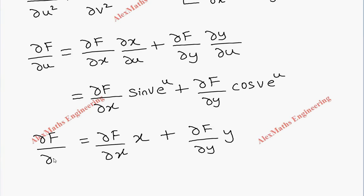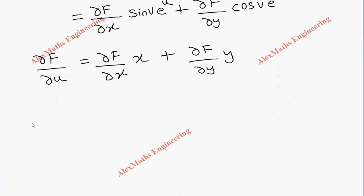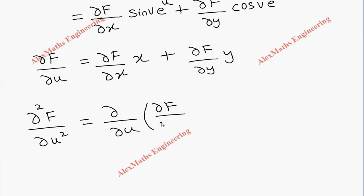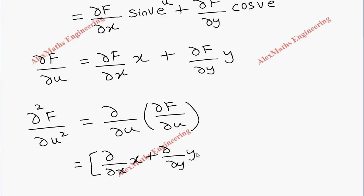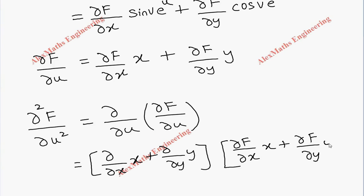Now we are going to write its second derivative, that is ∂²f/∂u², which is nothing but ∂/∂u of ∂f/∂u. We have two terms here. For ∂/∂u without f, we write: ∂/∂x · x + ∂/∂y · y. And for the second term, we copy along with f: ∂f/∂x · x + ∂f/∂y · y.